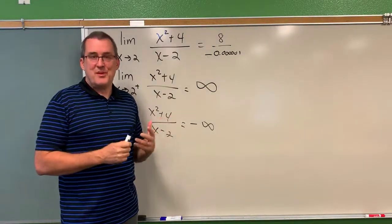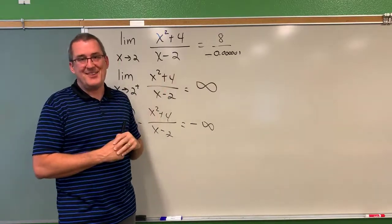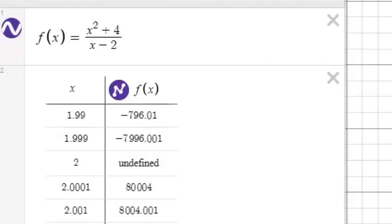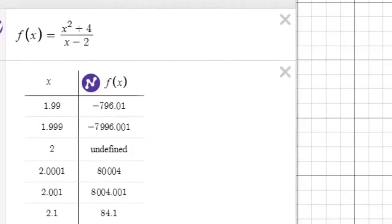Now, we're going to explore this using technology next to just confirm what we're thinking here. So we were examining the rational function x squared plus 4, all divided by x minus 2. And from our just mental math analysis of it, it seemed as though the closer the input quantity of x got to the value of 2,